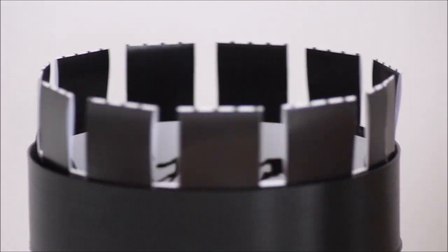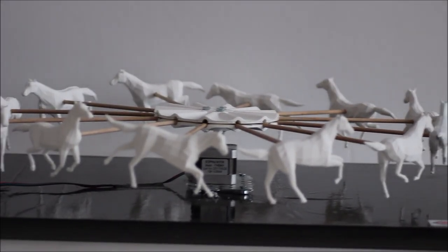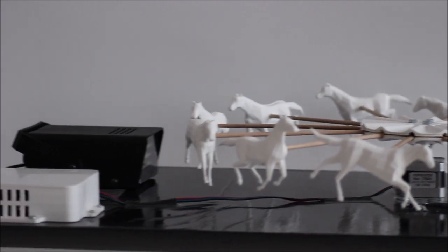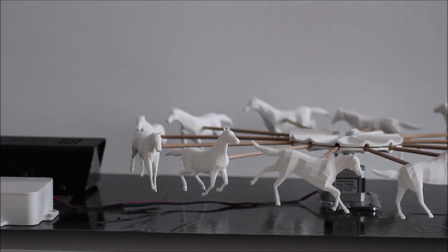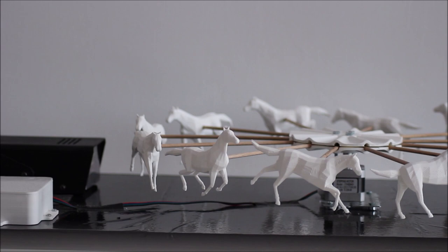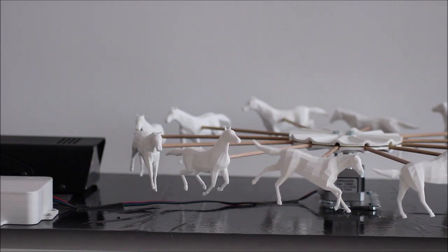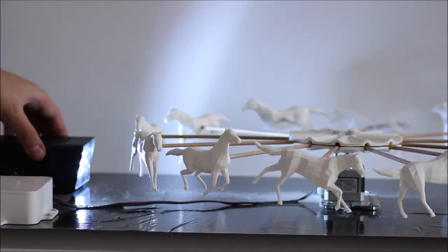This 3D Zoetrope relies on the same principle, but instead of flat 2D frames I am using 3D models, and instead of the slits I use a strobing LED light to illuminate each frame for a fraction of a second. The strobe and slits are necessary to freeze the frames; otherwise you will just see a blur.